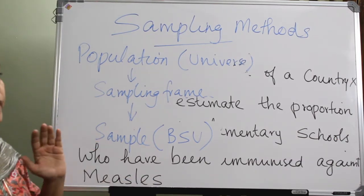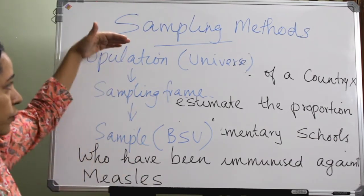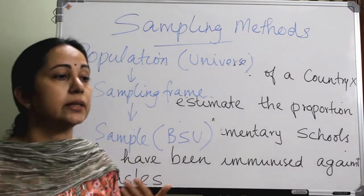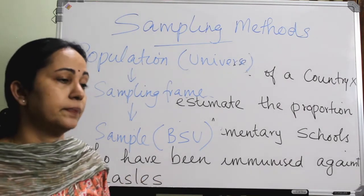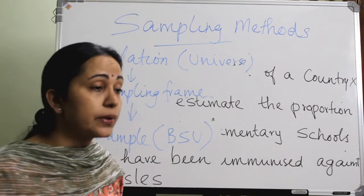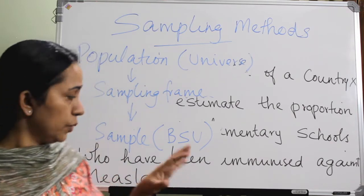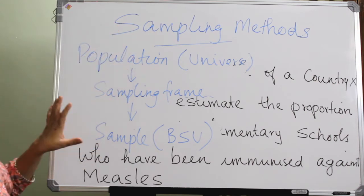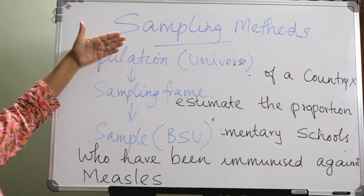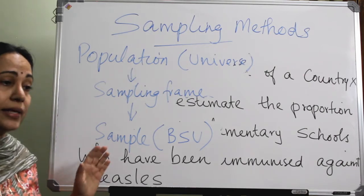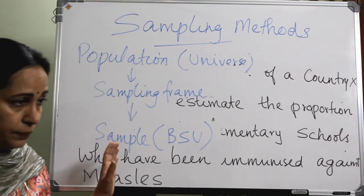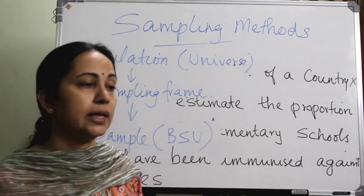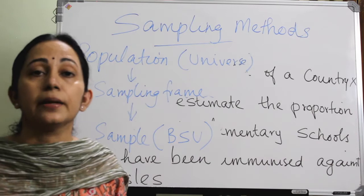This sample should be a true representative of the universe or population in terms of place, age, gender, and time. The sample should be a true representative of this population in every characteristic, so we can go for generalizability — that is called the external validity of the study. The sample should be a true representative of the entire population in terms of place, time, and person.